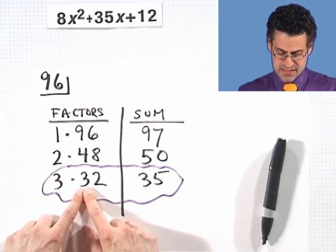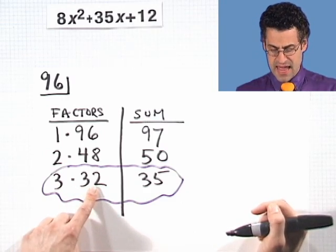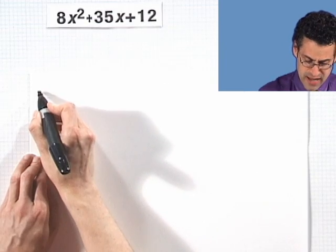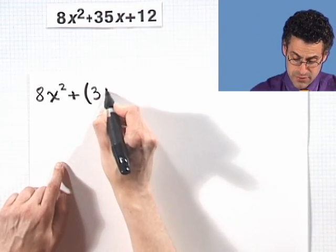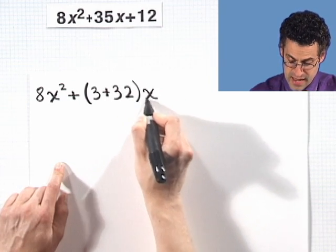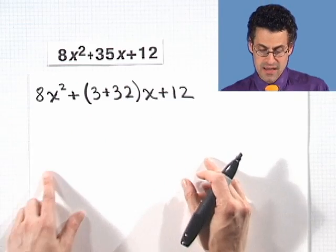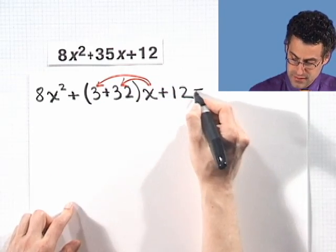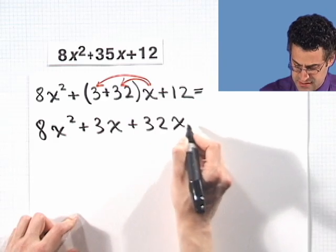So this 3 and 32 are going to be the key to factoring this. I'm going to pick 3 and 32, and notice that when I add them I get 35. I'm going to take that expression and write it out: 8x squared plus, but instead of writing 35, I'm going to write 3 plus 32, then times x, plus 12. This is exactly the same as the original — I just broke it up in a special way. Now I'm going to distribute the x: 8x squared plus 3x plus 32x plus 12.